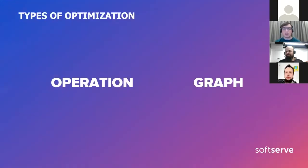There are two different types of optimizations that we can apply to neural networks: graph optimization and operation optimization.